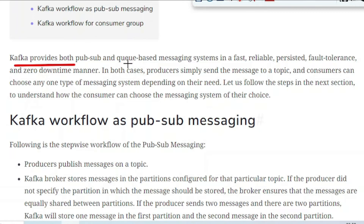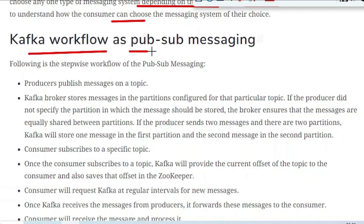In both cases, producers simply send the message to a topic and consumers choose any one type of messaging system depending on their need. Let us follow the steps to understand how consumers choose the messaging system of their choice. Below are the steps in which the workflow happens — from publishing a message to the Kafka broker to finally consuming it and the consumer processing the message.